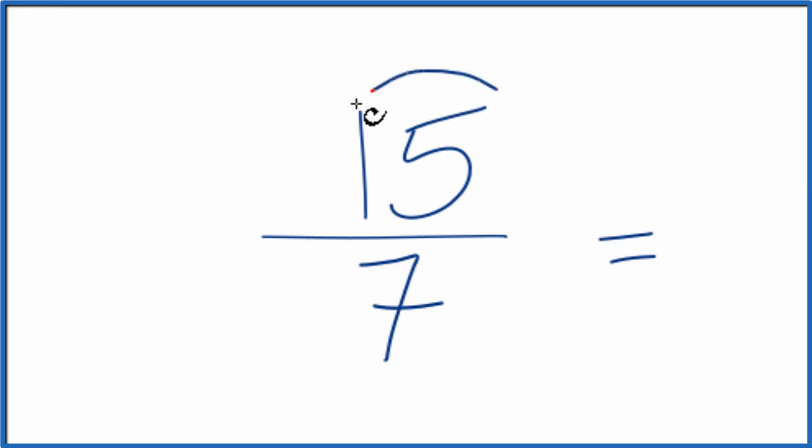To do that, we need to find a common factor, something that goes into 15 and 7 evenly.